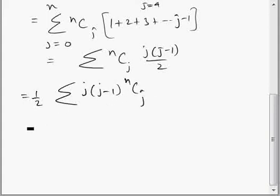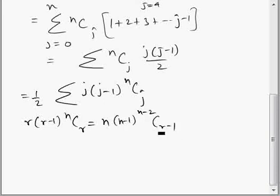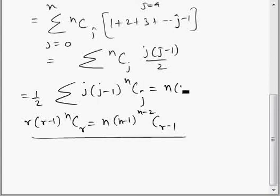Now we are going to use this formula: r into r minus 1 into nCr is n into n minus 1 into n-2Cr-2. Using this formula, I can write this as n into n minus 1, I take out, summation of n-2Cj-2.